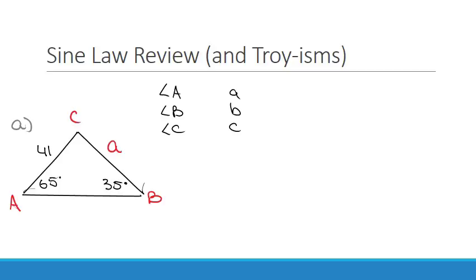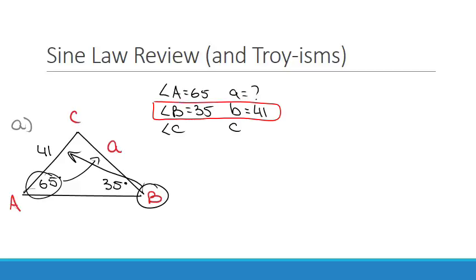So angle A is 65 degrees, B is 35 degrees, C we don't know. So side B, remember that if this is angle B, the side opposite angle B would be side B, so that's 41. And then angle A, the opposite would be side A. And that is what we're looking at.